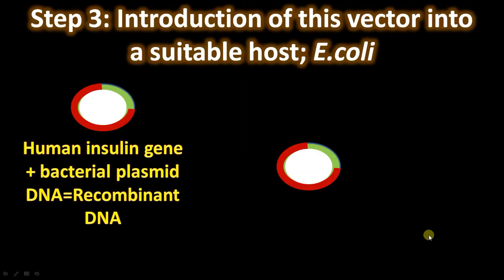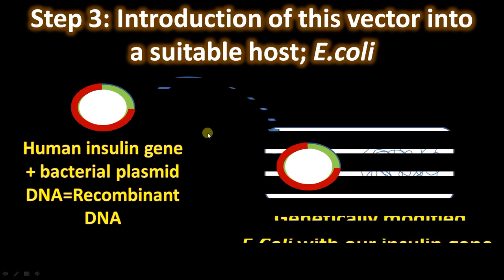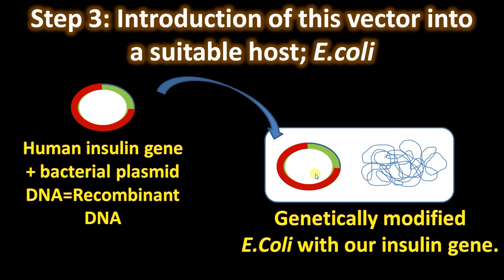Step three: introduction of this vector into a suitable host. The most common host used in insulin production is E. coli. Now we also have yeast and mammalian cell lines available. Our recombinant DNA molecule — with either the A gene or B gene of insulin inserted into the vector — is introduced into E. coli as the suitable host, giving us a recombinant vector inside the host with our gene of interest.